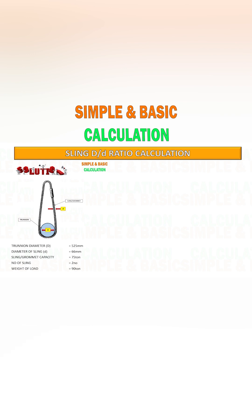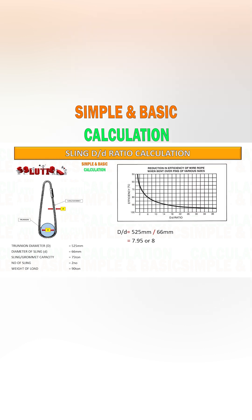See the example calculation for D/d ratio. To get the D/d ratio, we will divide the trunnion diameter by sling diameter. Once we get the value, we will plot it into the reduction chart.